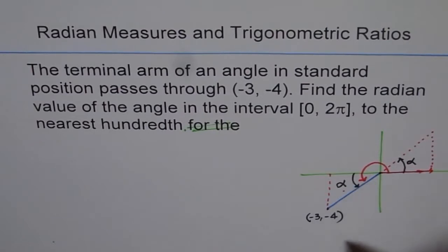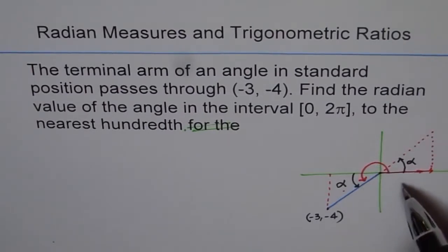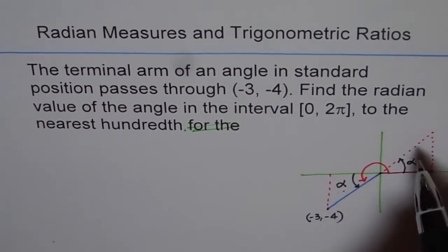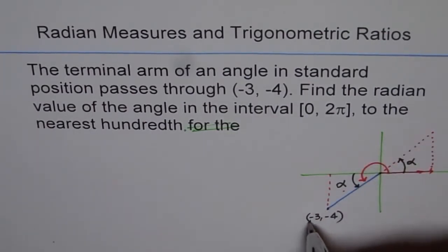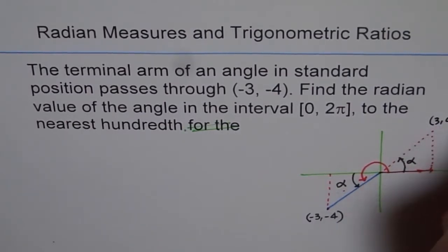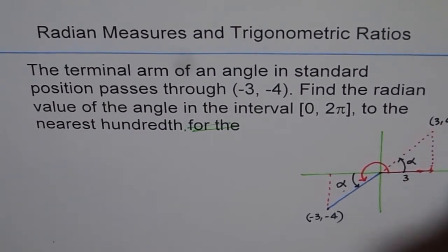Once we know the related acute angle then we can add and subtract 90, 180 or other terms depending on its position and find the principal angle. So this triangle is similar to that triangle. And therefore we have this point is (-3, -4) that becomes (3, 4). So in that case this side is 3 along the x-axis and along y-axis it is 4.